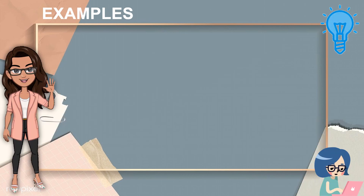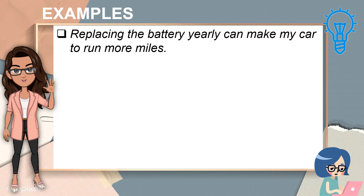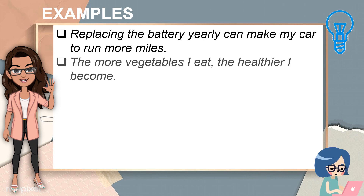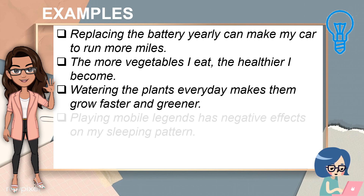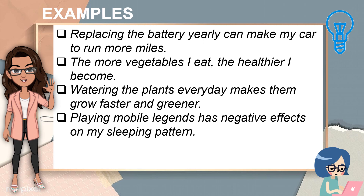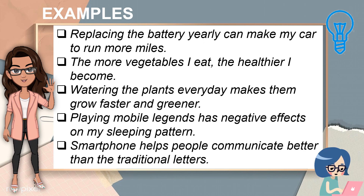Here are examples of well-written hypotheses. Replacing the battery yearly can make my car run more miles. The more vegetables I eat, the healthier I become. Watering the plants every day makes them grow faster and greener. Playing Mobile Legends has negative effects on my sleeping pattern. And a smartphone helps people communicate better than traditional letters.